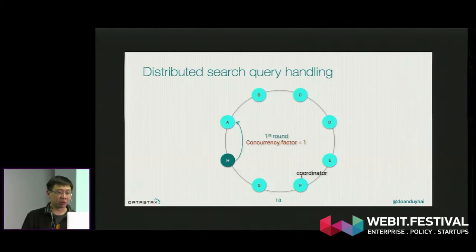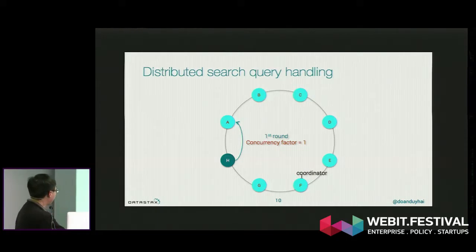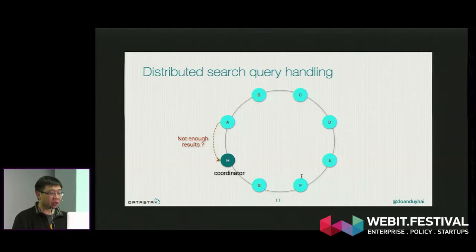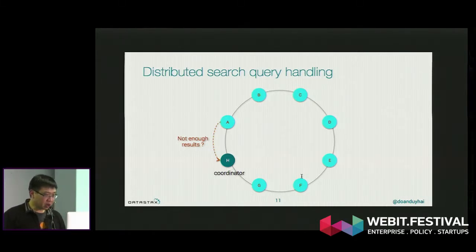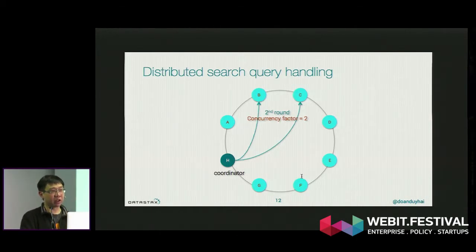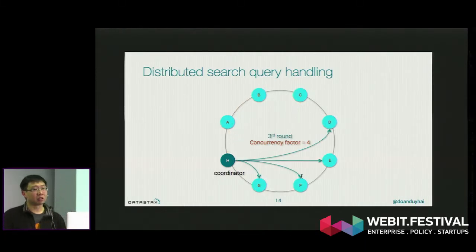How do we query data? For example, give me all people from Bulgaria — SELECT * FROM users WHERE country = 'BG'. The coordinator, which is the machine that receives the query, will ask one machine for data. If the result limit is not reached yet, the coordinator increases the concurrency factor and queries two more machines, then fetches that data back. If still not enough, it increases the concurrency factor again. This is how it works in Cassandra.